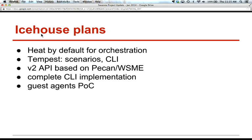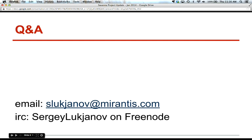We'd also like to complete our CLI implementation. The last but not least point is the Guest Agents Proof of Concept. We're working hard on implementing a proof of concept for agents, and we're proposing the idea of having unified guest agents in OpenStack for different services, to avoid duplicating efforts across different projects. This has already been discussed on the mailing list, and we'd like to return to the proof of concept later. That's all for the project status and plans update. Thank you. Any questions?